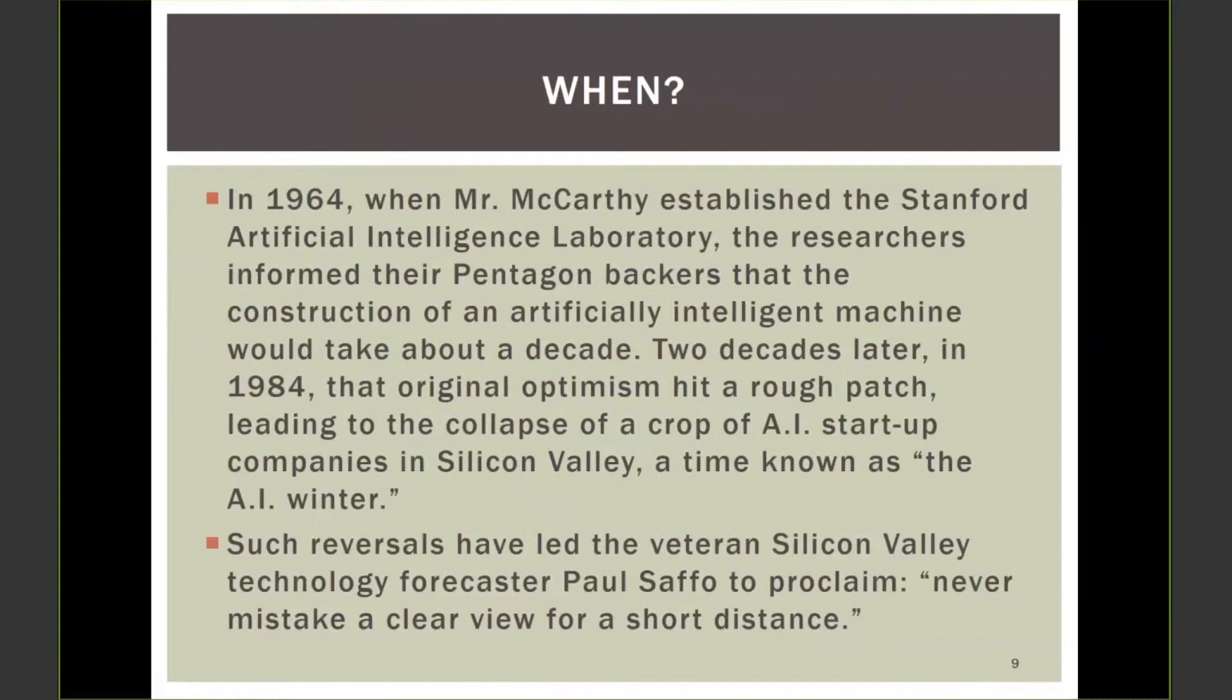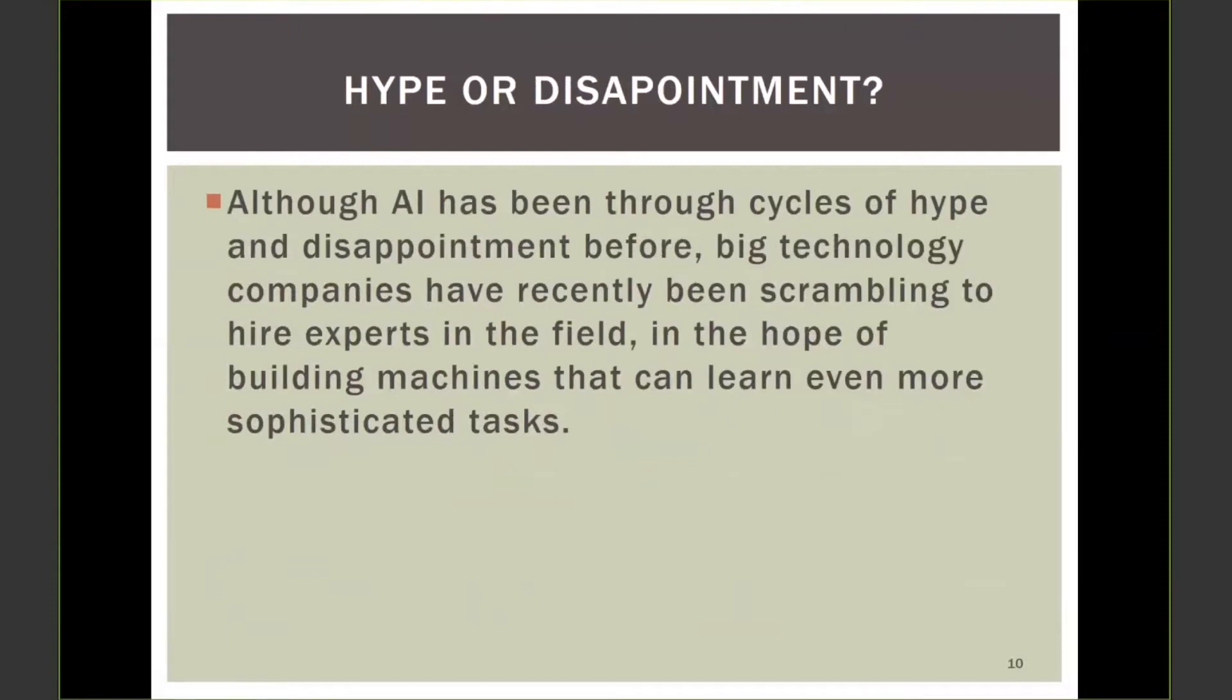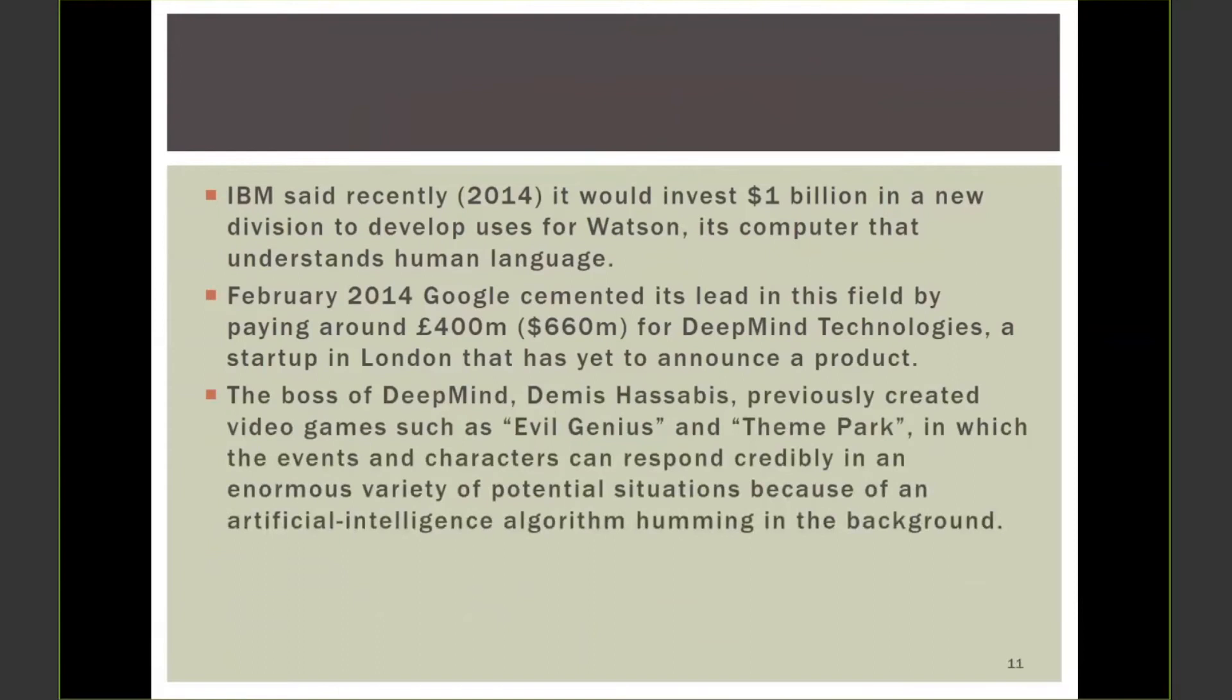In 1964 McCarthy started the AI lab at Stanford. Two decades later in 1984, that original optimist hit the rough patch and called it the AI winter. Basically a lot of people doubted that AI would ever get anywhere. Remember what I said about AI - AI is basically a conglomerate of technologies, some better, some worse, performing things that humans typically perform, but many of them humans never thought of doing, and these technologies are doing. However, there has been this kind of hype cycle of disappointment. But I don't think there are too many people today that doubt that AI is a very important thing.